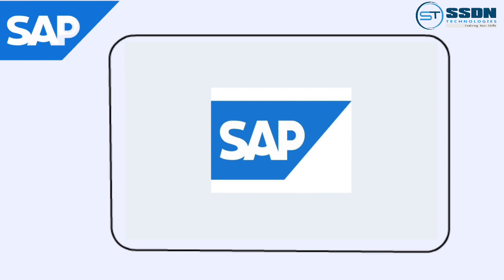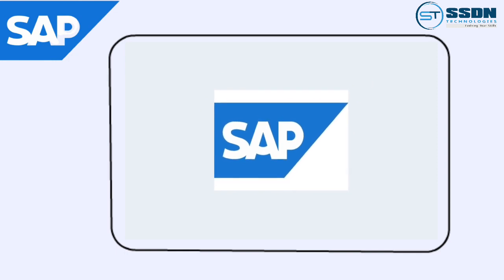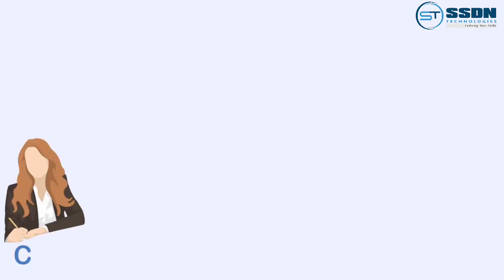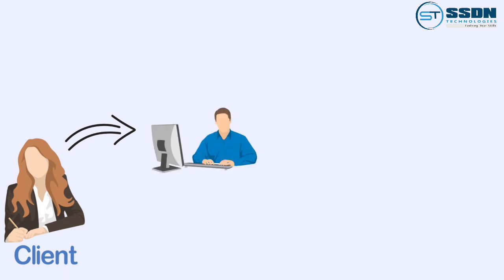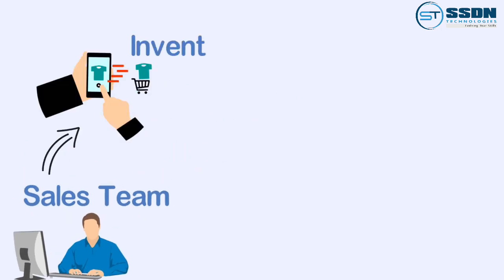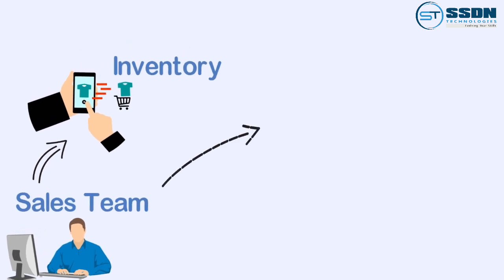Let's understand this with the help of an example. Suppose a client approaches a sales team asking for a particular product. When there is no ERP software, no SAP, the process goes like this: the client contacts the sales team to check the availability of the product, and the sales team approaches the inventory department to check for the availability of the product.